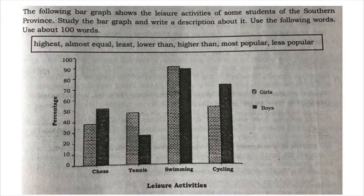Now we will check out the meanings of the given words in the box. Highest means 'wedi'. Almost equal means 'samana'.